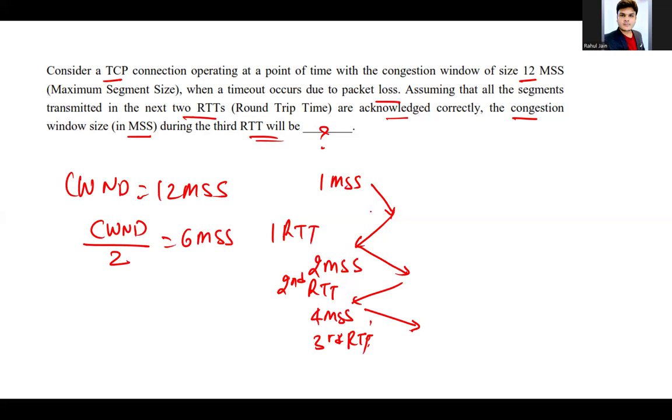So here you can say that because one MSS, two MSS, and then four MSS will be passed here, somewhere six MSS will be here. The meaning is that